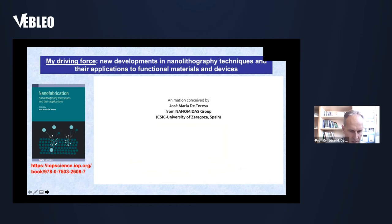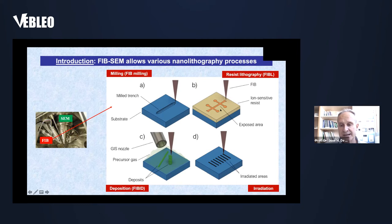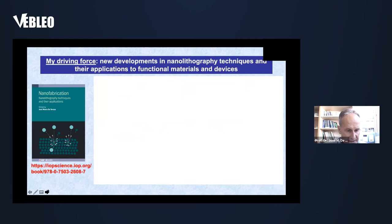Now I'll go deeper into my research topic. I use a dual-beam system composed of a scanning electron microscope and a focused ion beam. With the focused ion beam I can do milling — scanning the beam to remove material locally. I can also use an ion-sensitive resist, irradiating it with the focused ion beam to change the resist's sensitivity, as in electron beam lithography.